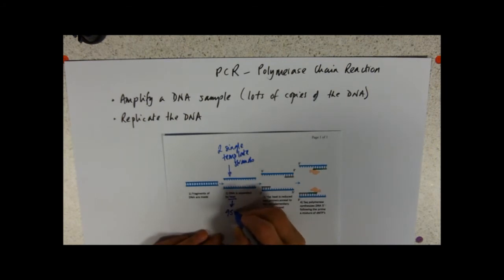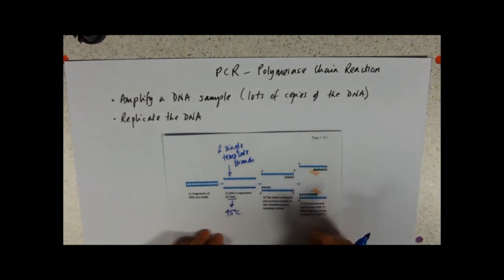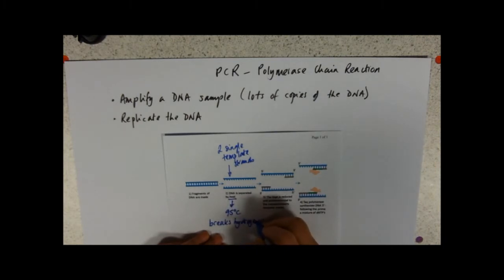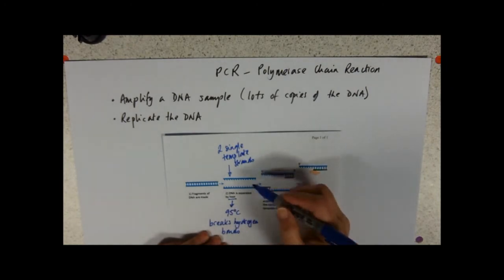And what we use to do that is heat. So you just merely heat up your DNA to 95 degrees Centigrade. And that breaks the hydrogen bonds. So now we've got two single strands of DNA that can act as templates.